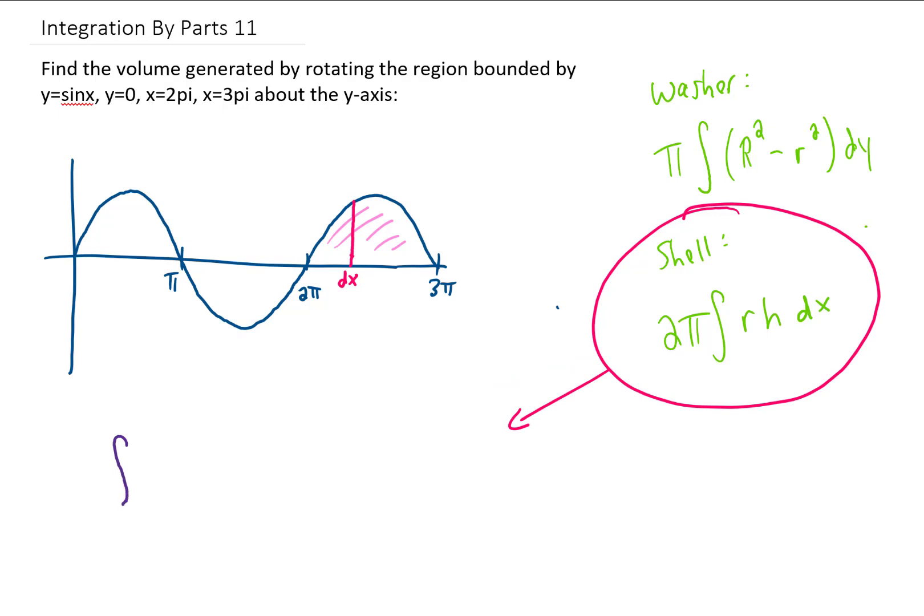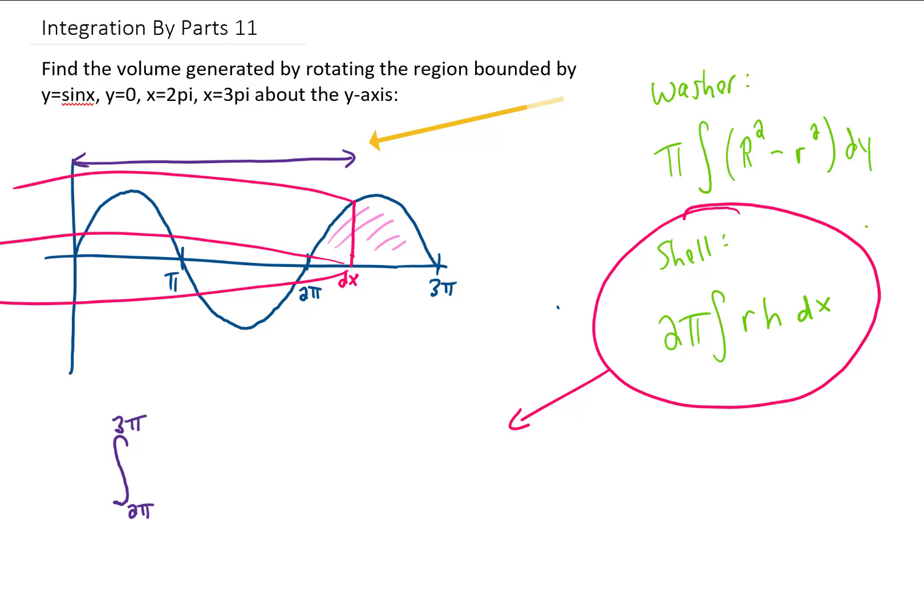We're going to integrate with respect to x. We're going to be integrating from 2π to 3π. The radius of each one of these cylindrical shells that we create by rotating this region around the y-axis is going to be this distance right here. It's simply going to be the x value, and that x value can range anywhere from 2π to 3π, just like our limits of integration say.